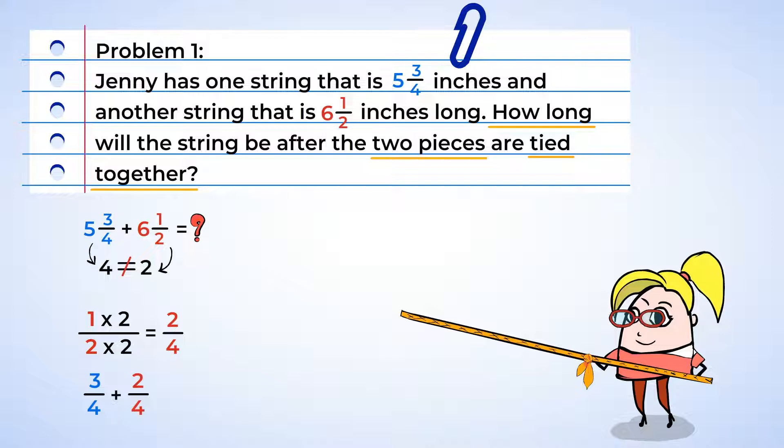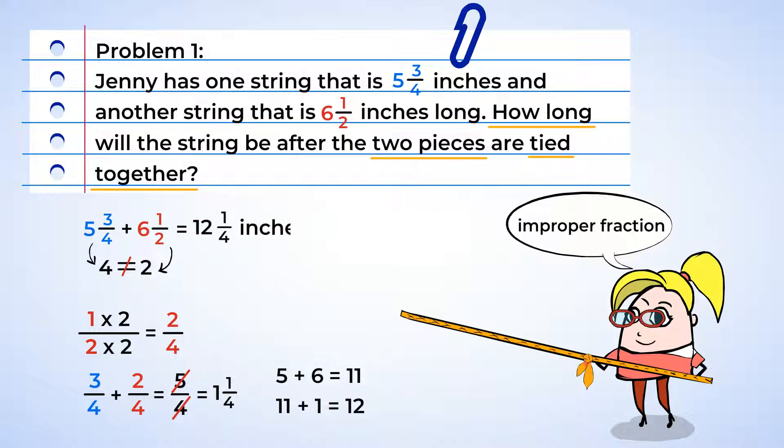3 plus 2 is 5. Keep the denominator of 4, and we get 5/4. But we have an improper fraction here, so let's break it down. 5/4 equals 1 whole and a quarter. Now it's time to add up the whole numbers. 5 plus 6 is 11, plus 1 is 12. And so the string is 12¼ inches long.